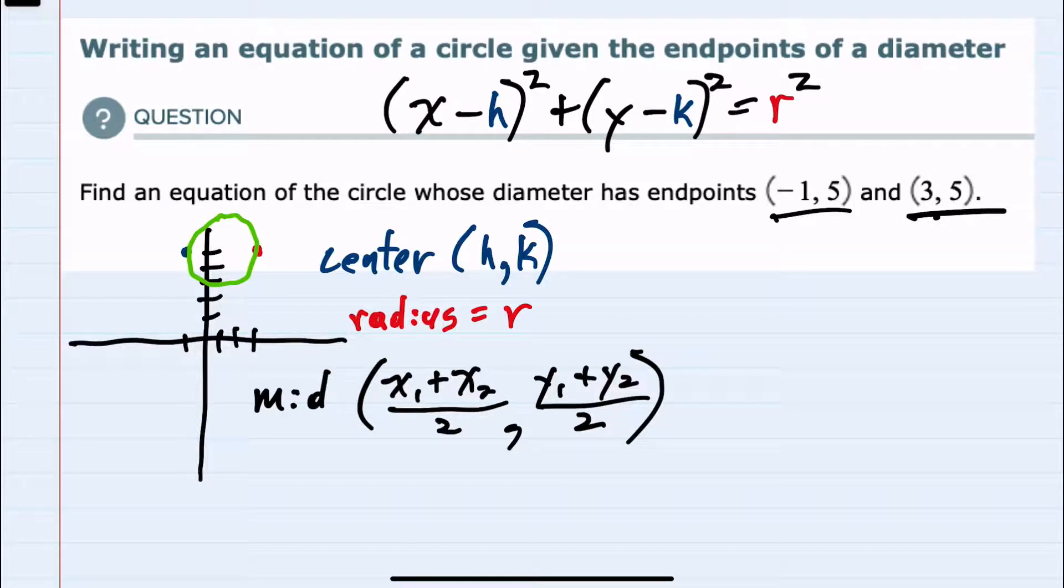However, for this example, since the two points that we have for the diameter are on the line, even visually, we can tell that the center halfway in between these two points will be the coordinate positive 1, 5.